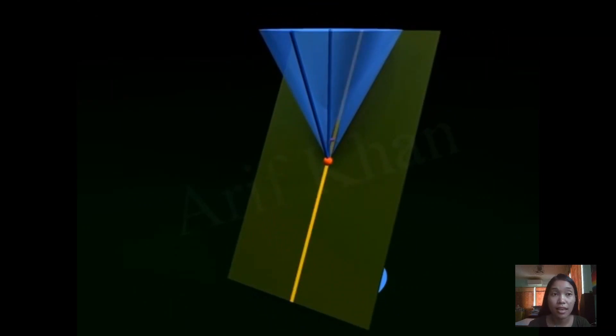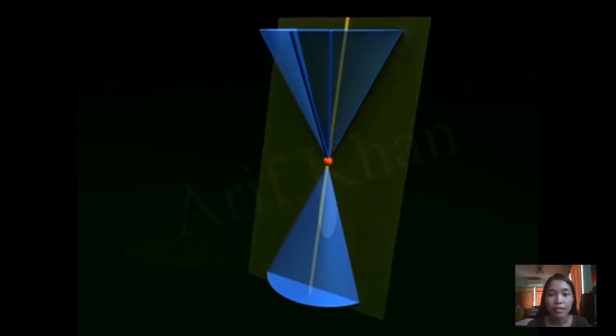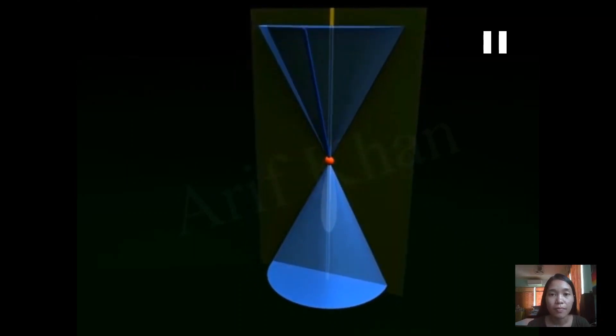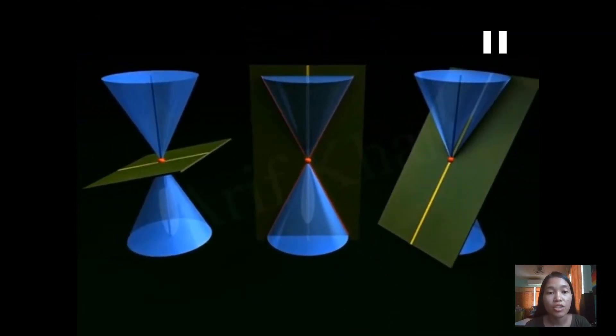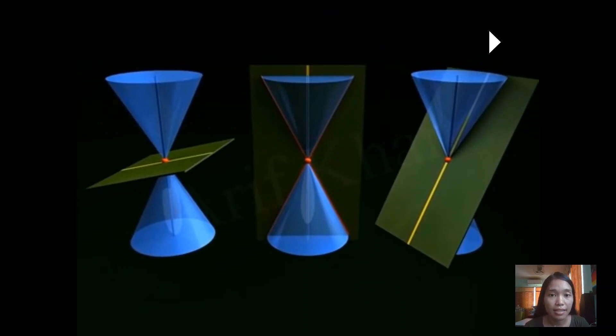Now if the plane would be perpendicular to the circular base, we notice we will have intersecting lines. So those are the three types of degenerate conics: the point, the line, and the intersecting lines.